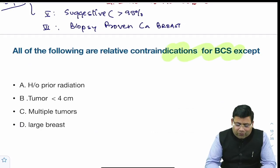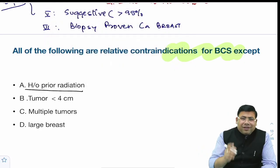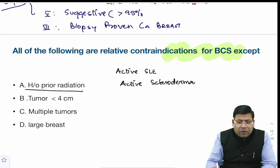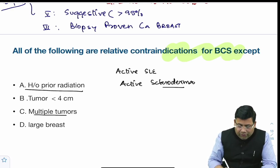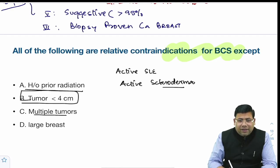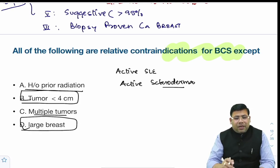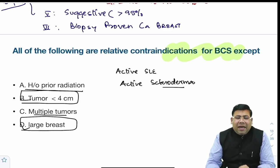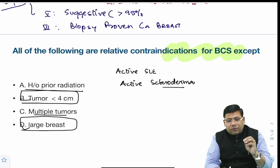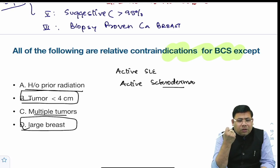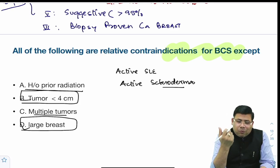There was a straightforward question on BCS contraindications. History of prior radiation is a contraindication. Active SLE and active scleroderma are also contraindications. Multiple tumors is a relative contraindication. Tumor less than 4 cm size and large breast are NOT contraindications for breast conservation surgery, though large breast makes it technically more difficult.